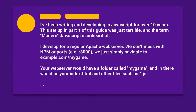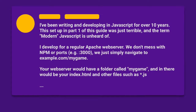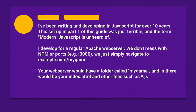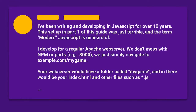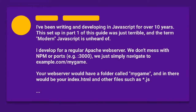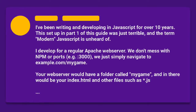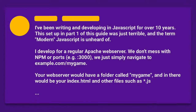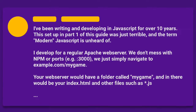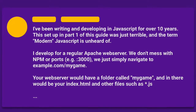I've been writing and developing in JavaScript for over 10 years. This setup in part one of this guide was just terrible. And the term 'modern JavaScript' is unheard of. I developed for a regular Apache web server. We don't mess with NPM or ports, e.g. colon 3000. We just simply navigate to example.com/my-game. Your web server would have a folder called my game, and in there would be your index.html and other files such as star.js. It is always okay to be wrong and to not know something, as long as you then take the time to learn.